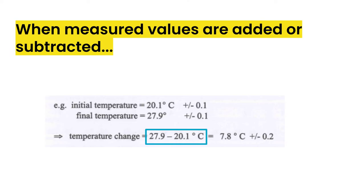To get the uncertainty for this calculated value, we need to take the two absolute uncertainties of 0.1 and add them together to get 0.2. So our final calculated value is 7.8 plus or minus 0.2 degrees Celsius. So those are pretty easy to do.